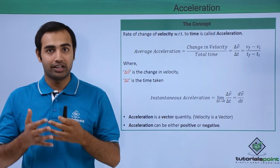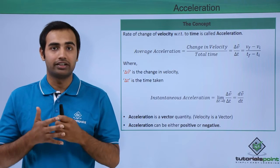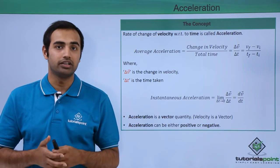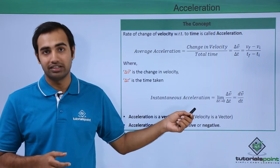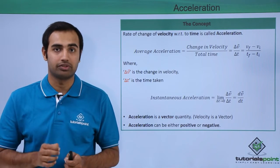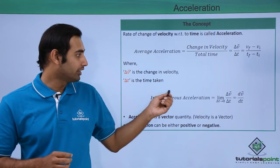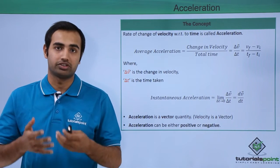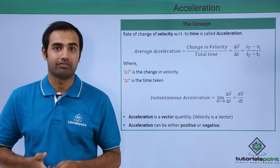There's another kind of acceleration which is instantaneous acceleration. It can be defined as dv/dt or dv vector by dt. It is the instant change of acceleration at any specific point of time. Now clearly acceleration can be either positive or negative because it's a vector, depending on our sign convention.